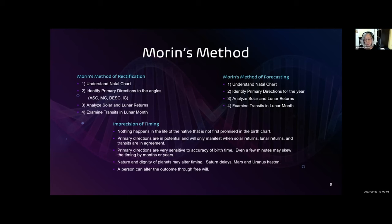The nature and the dignity of planets may alter timing. For example, Saturn delays, Mars and Uranus hasten. And very importantly, a person can alter the outcome through free will.